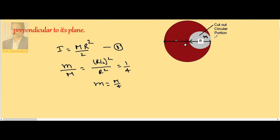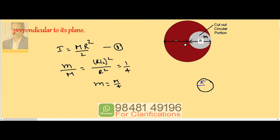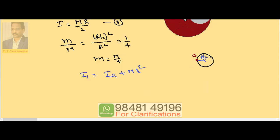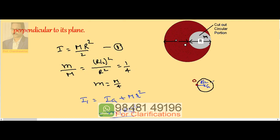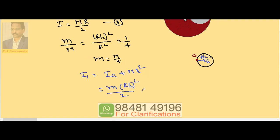Now for the removed portion, the radius is R/2, since the diameter is R. The axis passes through center O, which touches the end of the removed circular part — the axis is perpendicular to the plane at point O. Using the parallel axis theorem, I1 = I_G + mR², where I_G is the moment of inertia about the center of the removed portion. So I_G = m·(R/2)²/2, and the distance between the two parallel axes is R/2.